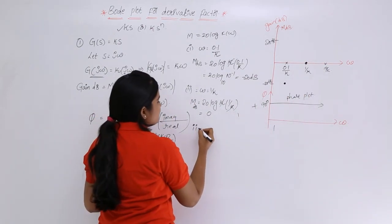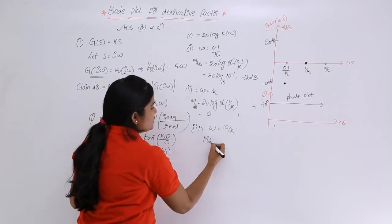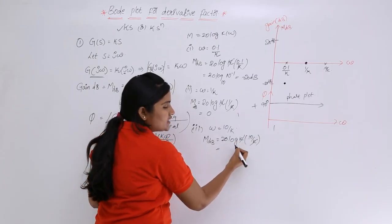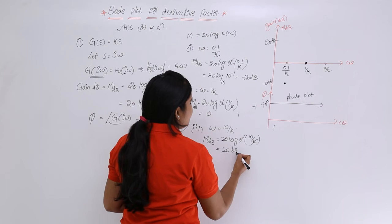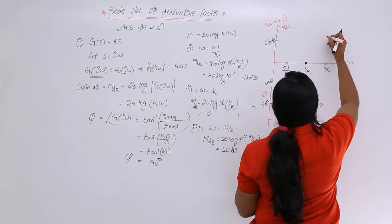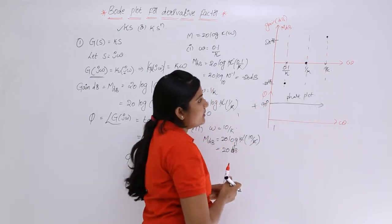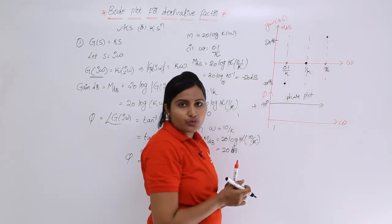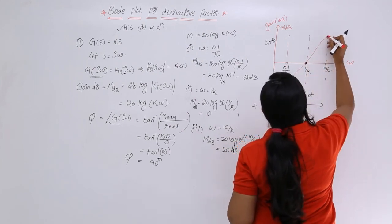At ω = 10/K: M = 20 log(K · 10/K) = 20 log(10) = 20 × 1 = +20 dB. Note that the base of log in magnitude calculations is always 10. So at ω = 10/K we get +20 dB. Summarizing: −20 dB at 0.1/K, 0 dB at 1/K, and +20 dB at 10/K. By joining all these points, we get the magnitude plot, which is a rising straight line.